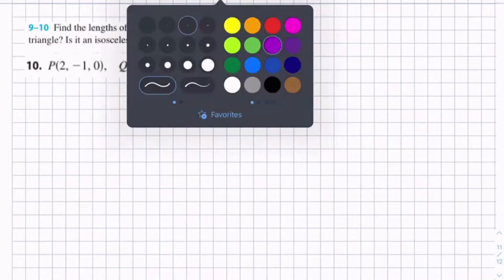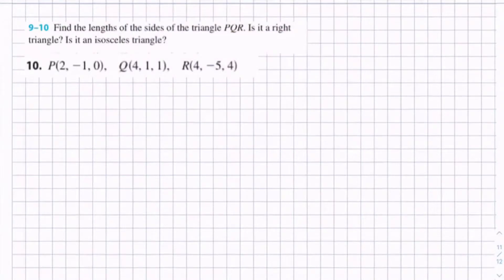Find the lengths of the sides of the triangle PQR. Is it a right triangle? Is it an isosceles triangle?